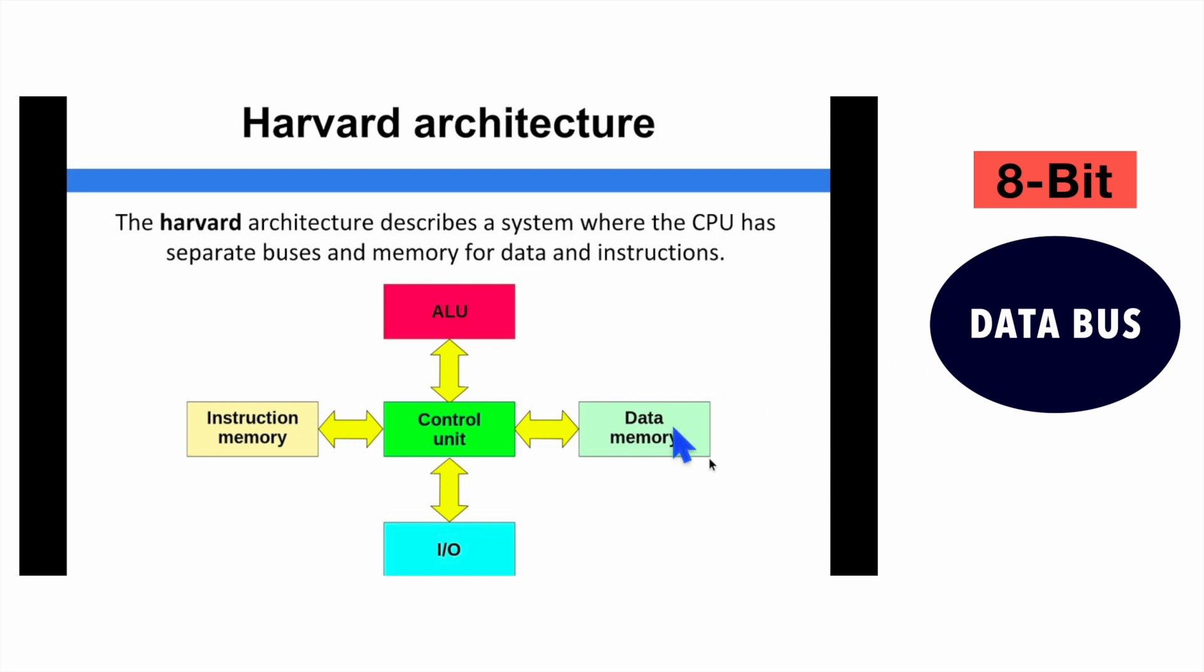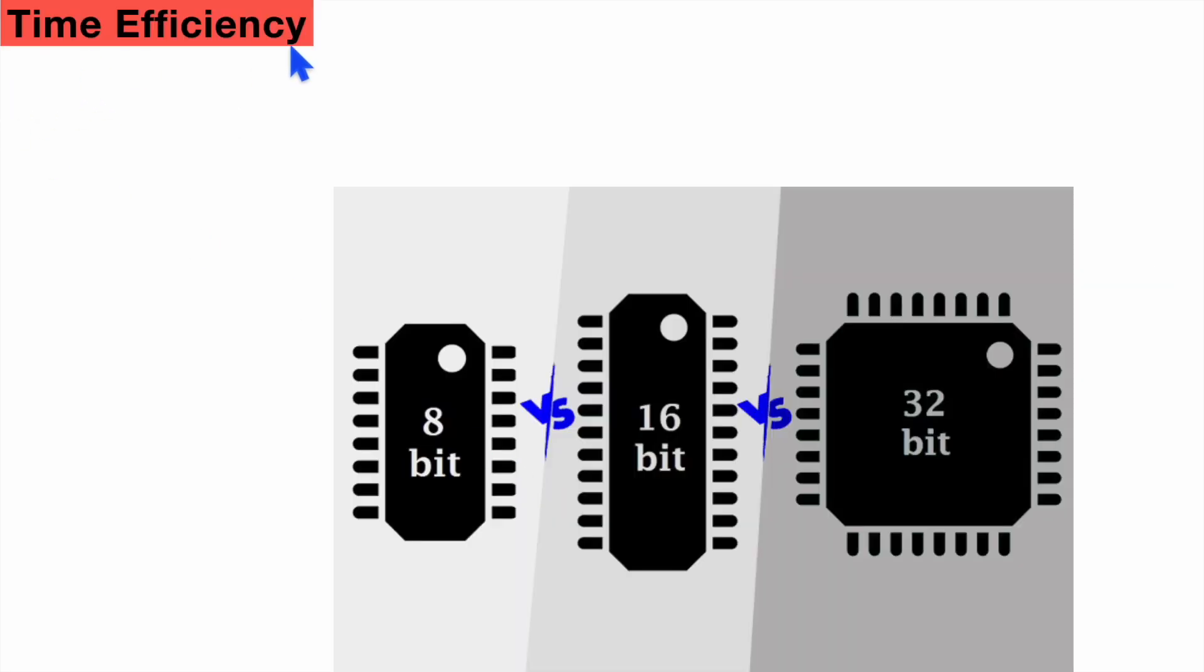So at any moment, an 8-bit microcontroller can fetch only 8 bits of data from the data memory. In 16-bit, it can fetch 16 bits of data from data memory. And in case of 32-bit microcontroller, it can fetch 32 bits of data from the data memory. So from the time efficiency point of view, 8-bit microcontroller is the least efficient.